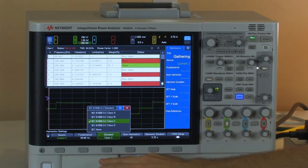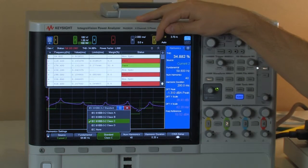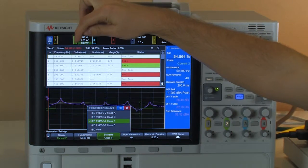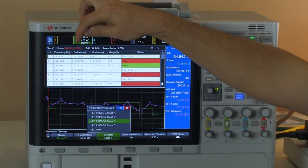Now class C, you can start seeing some failure in the harmonics. And up here you can see how many harmonics you actually failed.